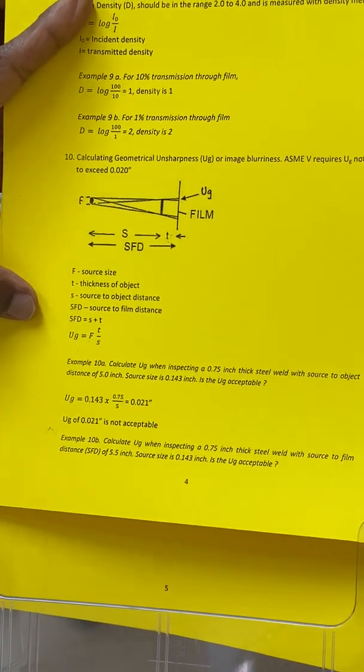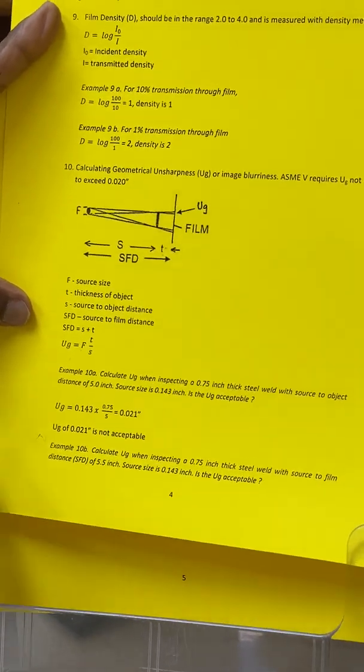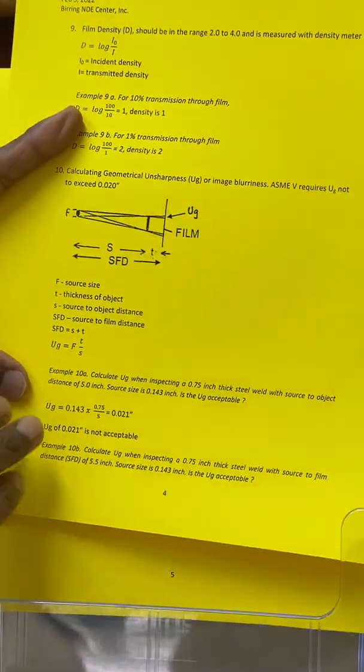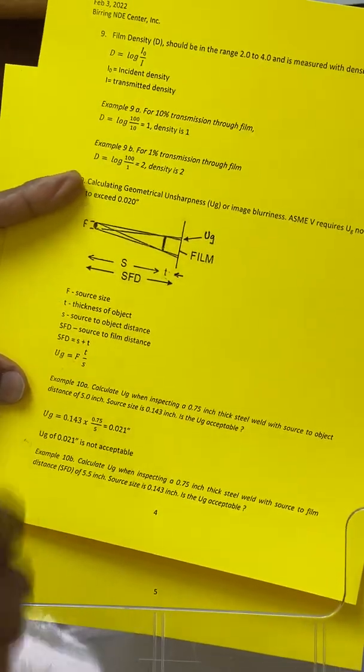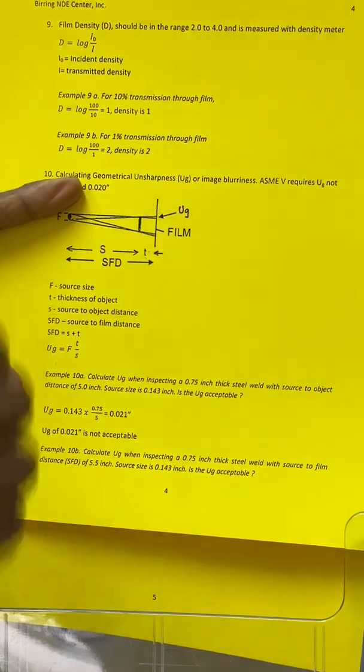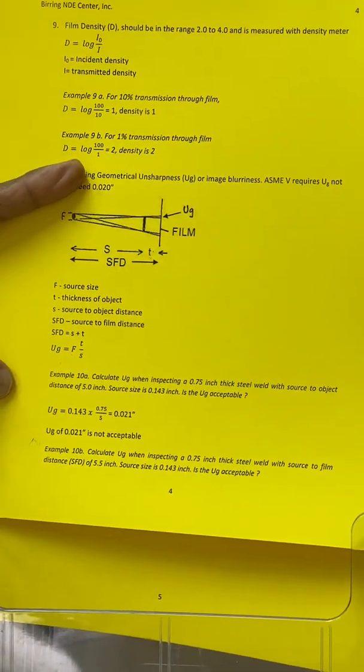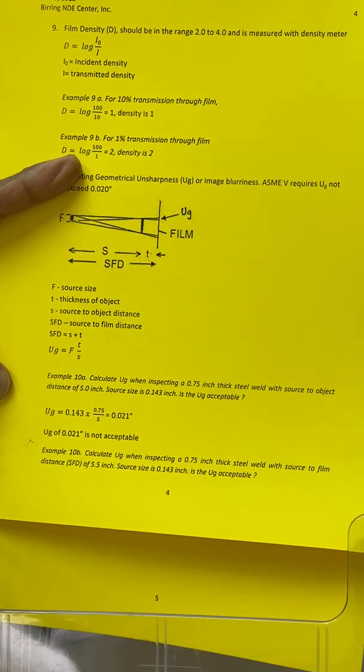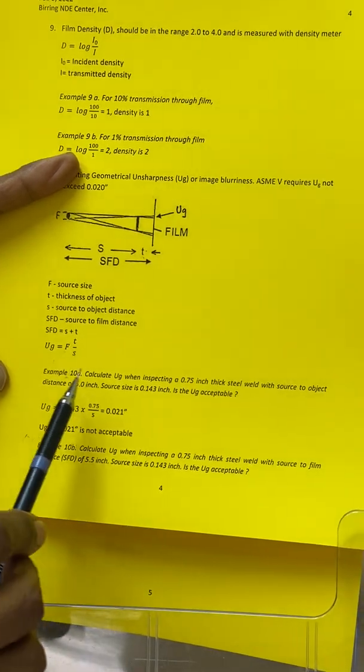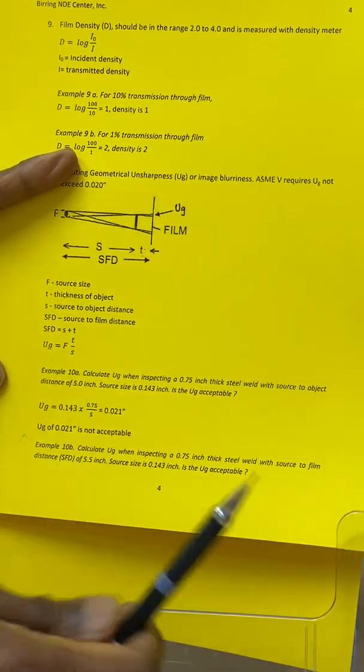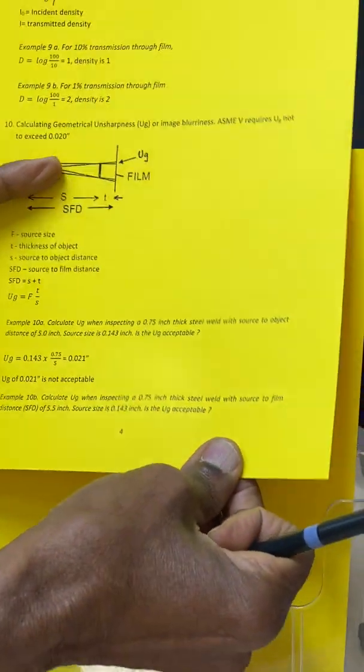The codes require that this Ug should not exceed 0.5 millimeters or 0.020 inches. In order to meet the code requirement, we have to back-calculate the source to the object distance. We can calculate using the same formula, which is given here.